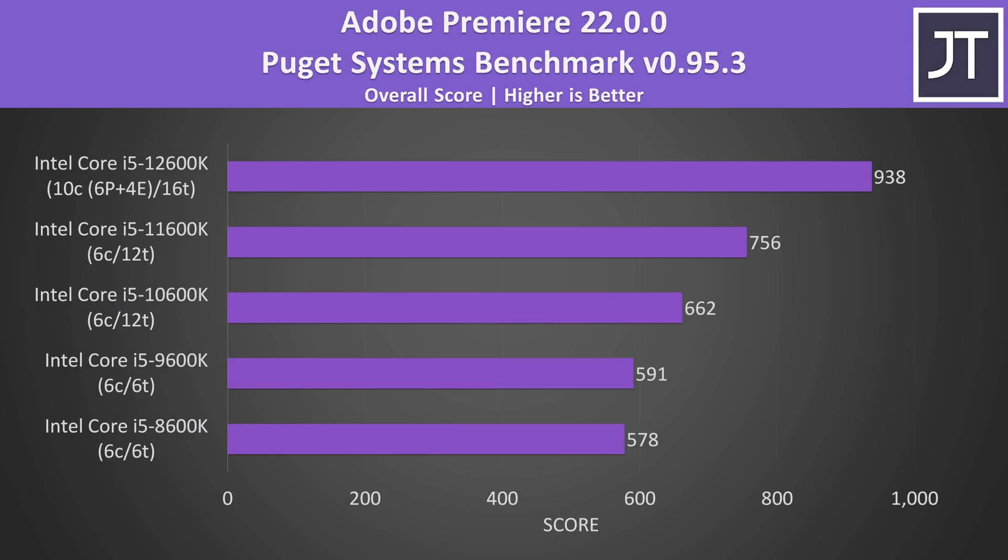Adobe Premiere was tested with the Puget Systems benchmark tool, covering video editing tasks like exporting, playback and more. The 12600K was at the top, 24% ahead of the 11600K — the biggest generational improvement out of the last 5 generations in this test.